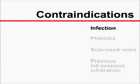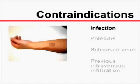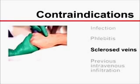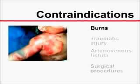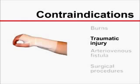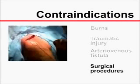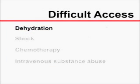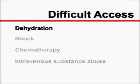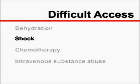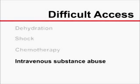Relative contraindications to inserting a peripheral catheter in a specific site may include infection, phlebitis, sclerosed veins, previous intravenous infiltration, burns or traumatic injury proximal to the insertion site, arteriovenous fistula in an extremity, and surgical procedures affecting an extremity. Extreme dehydration or shock may render cannulating collapsed peripheral veins impossible. Some patients may lack suitable peripheral veins because of prior chemotherapy or intravenous substance abuse.